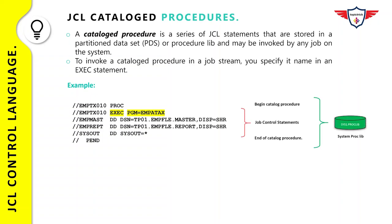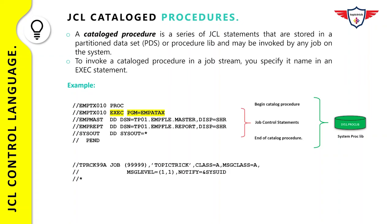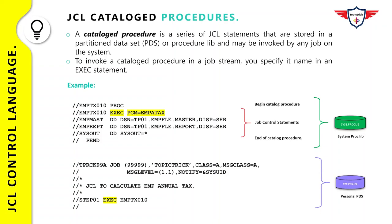Before discussing the catalog procedure example, here's an interview question — write the correct answer in the comment section. The question is: if you have created a catalog procedure and stored it in your private library, how will you invoke this catalog procedure with the help of a JCL?